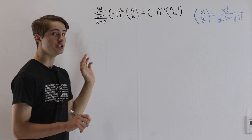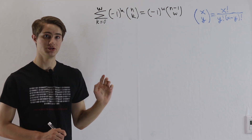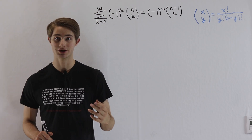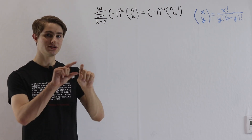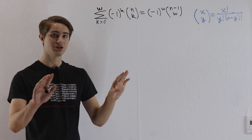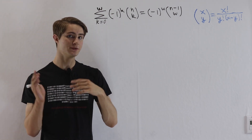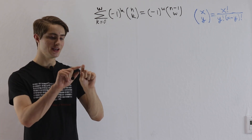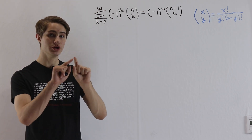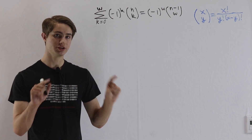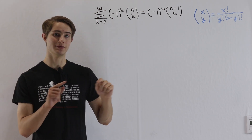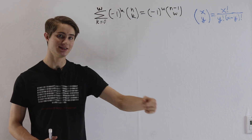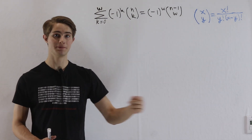We're going to use w equals 0 as the base case. And then in order to prove induction, we're going to say let's assume it's true for some w equals m. Then, given that we know it's true for w equals m, we can prove that it's true for the next case, m plus 1.